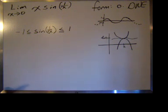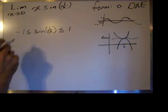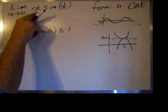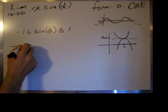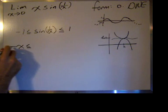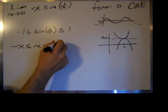So in order to use the squeeze theorem, once we have this inequality and it's true, notice that if we multiply through by x—so we'll multiply through by x—we get negative x, x times the sine of 1 over x.